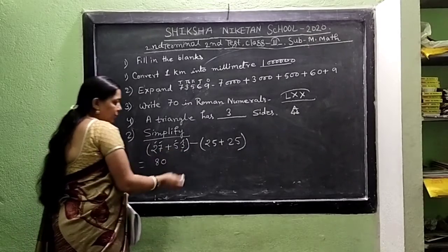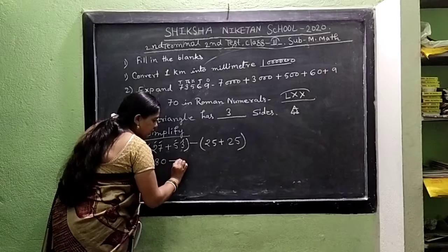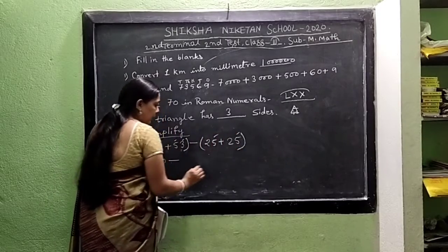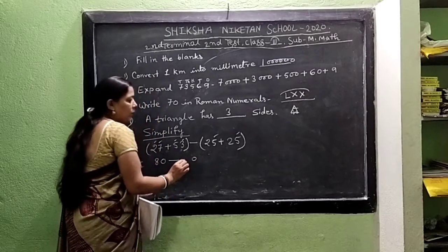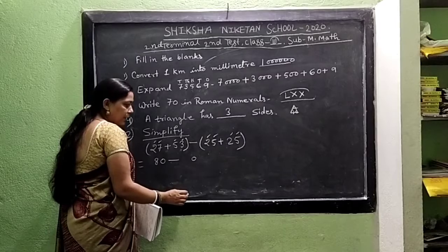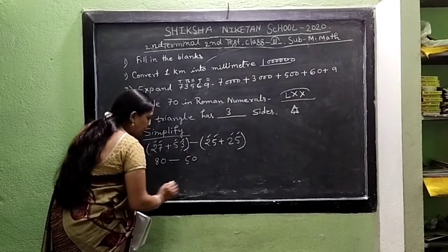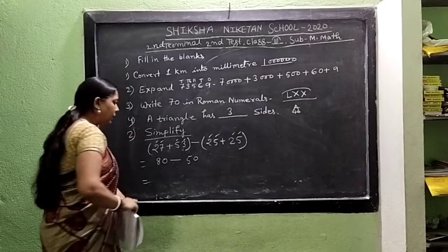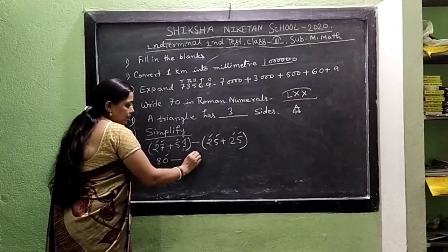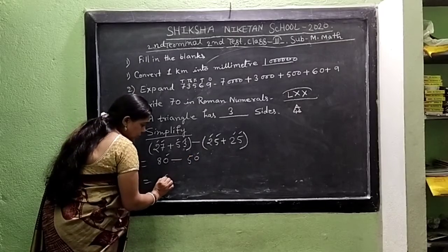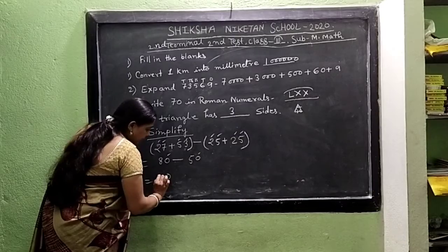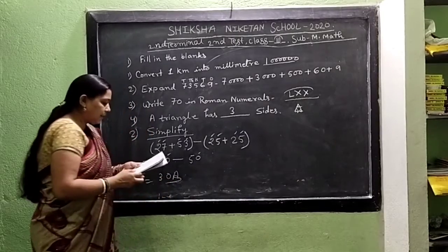So we don't write the bracket. Minus. Put the symbol of minus. Then we add those numbers in the second bracket: 5 plus 5 is 10, carry 1; 2 plus 2 plus 1 is 5. So the second bracket gives 50. Then we subtract: 0 from 0 is 0; 5 from 8 is 3. Answer is 30.